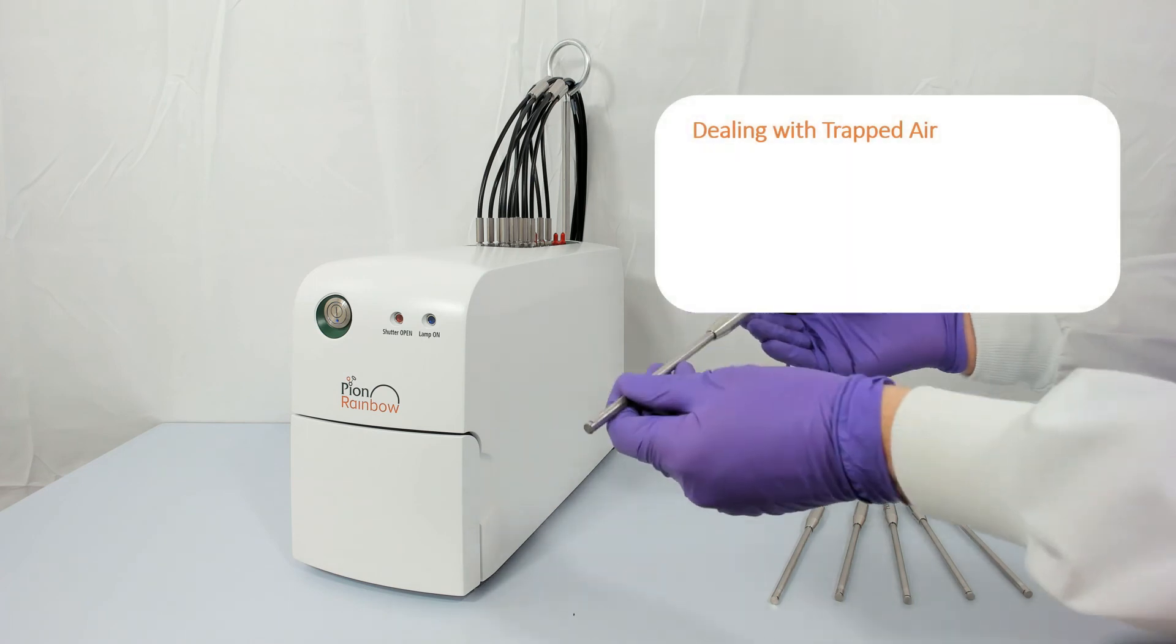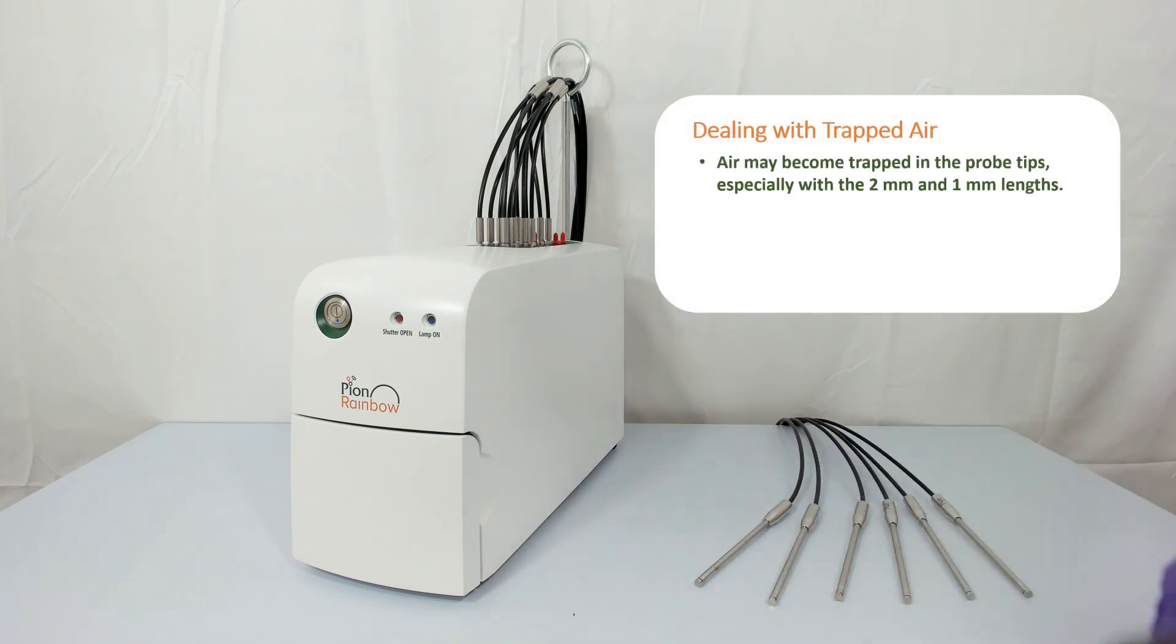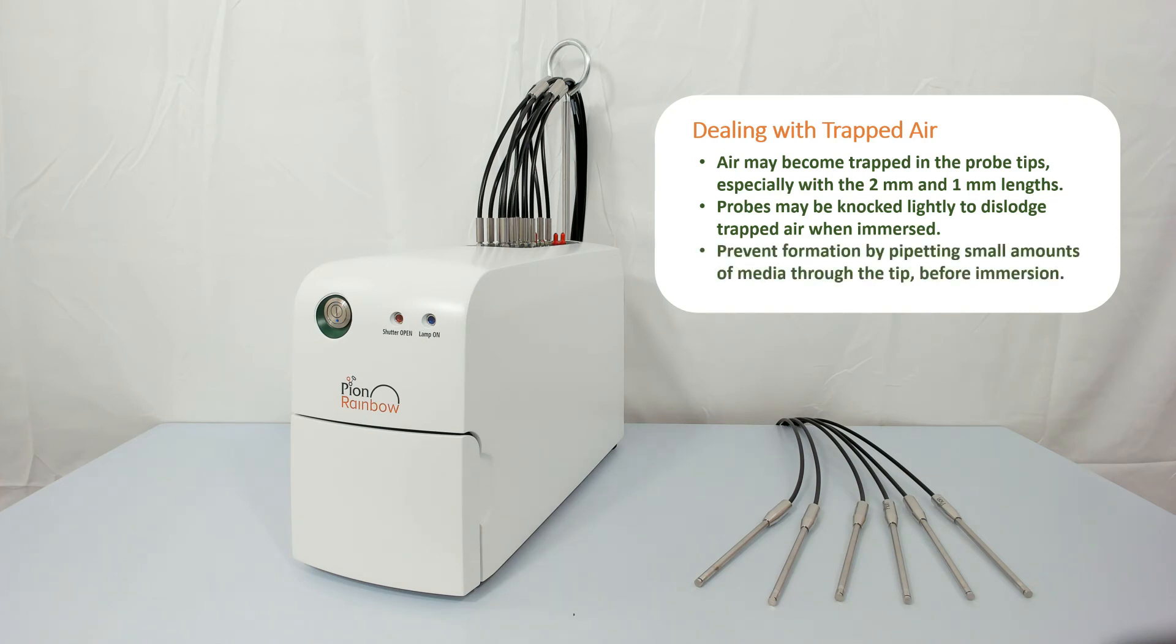As the path length reduces, the likelihood of air bubbles becoming entrapped in the path becomes greater, especially so with the 2 and 1 mm tips. Bubbles may be removed from the path either by knocking the probes lightly, or their formation may be discouraged by rinsing the probe tip with a small amount of the medium prior to immersion, in order to break the surface tension between air inside the tip and the medium. Using degassed media is also advisable.